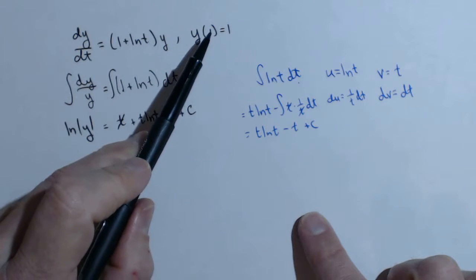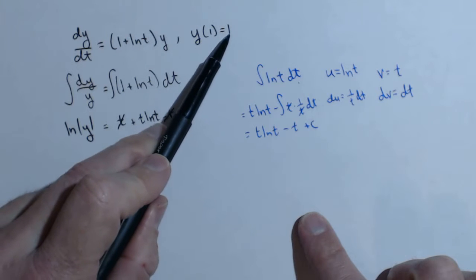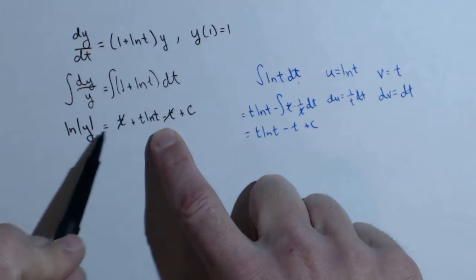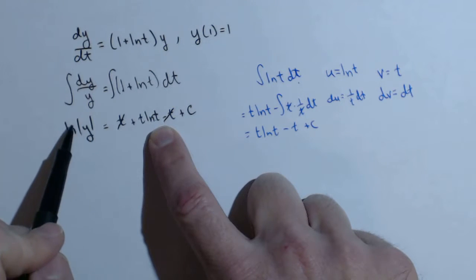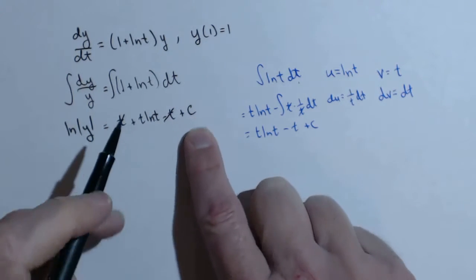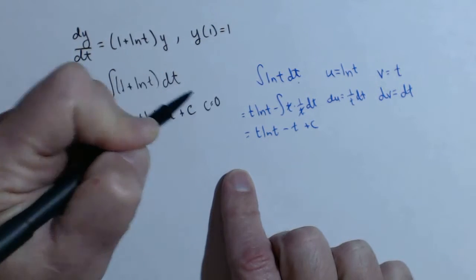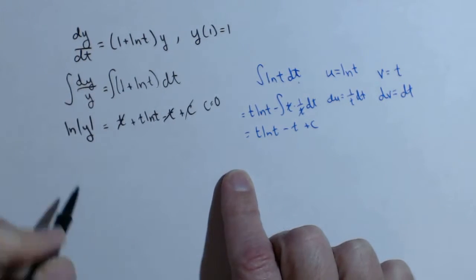And we can actually find the constant pretty quickly here, because y of 1 equals 1. Well, when I plug in 1 for t here, that's going to be 0. When I plug in 1 for y, that's going to be 0. So that means c must equal 0.